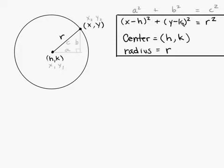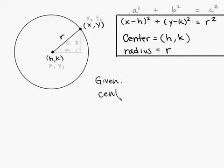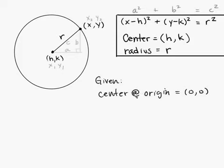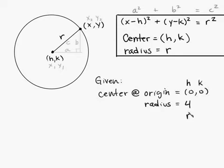So that's why you have it in this form: x minus h, quantity squared, plus y minus k, quantity squared, is equal to r squared. Let's do an example. We're given a center at the origin, which is (0, 0), and a radius of 4. So h = 0, k = 0, and r = 4.